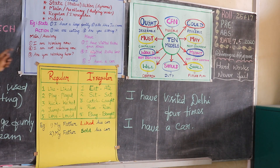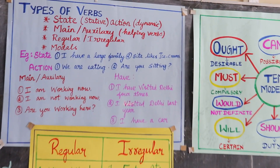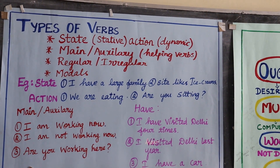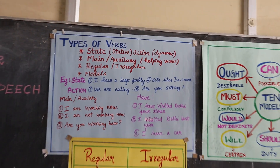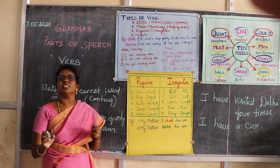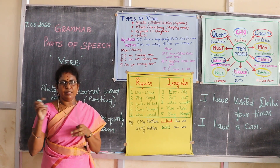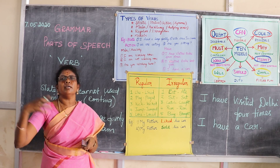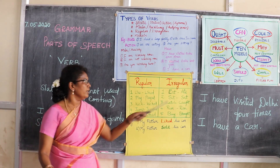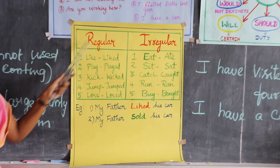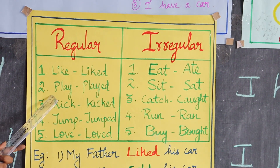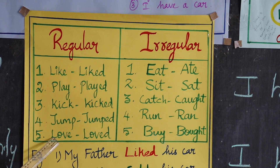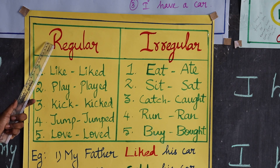The third category is regular and irregular verbs. What is the difference? If the last letter of the past form ends in ED, it indicates simple past tense — that is called a regular verb. Examples of regular verbs: like, play, kick, jump, love — all come under regular verbs.